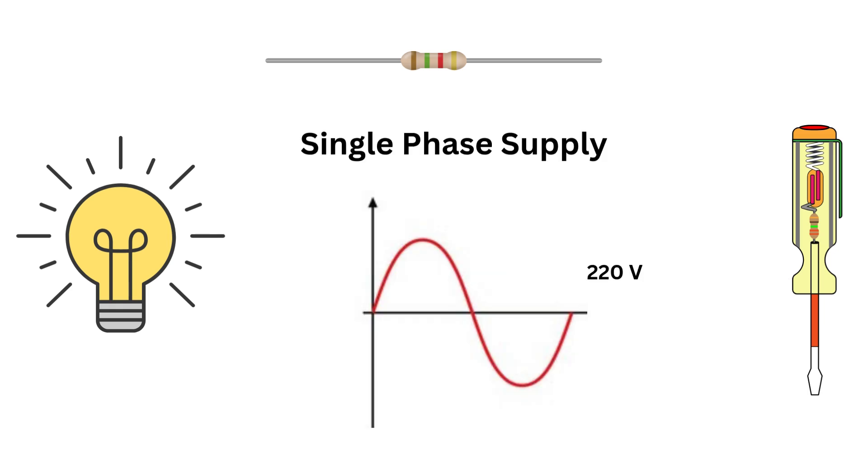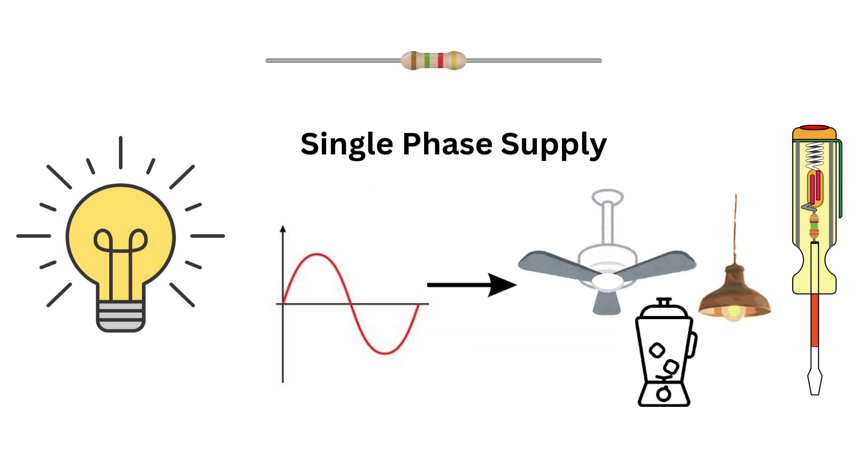First, let's talk about single phase supply. In most homes, we use single phase 220 volts power. It's called single phase because there's just one alternating voltage waveform. This type of supply is perfect for light loads like fans, lights and household appliances.